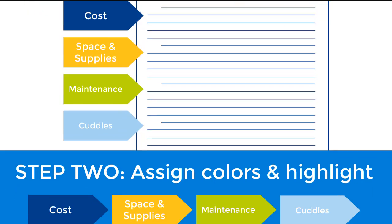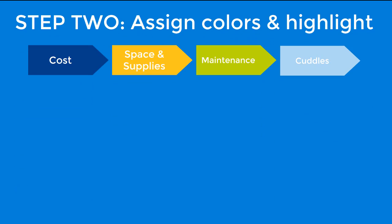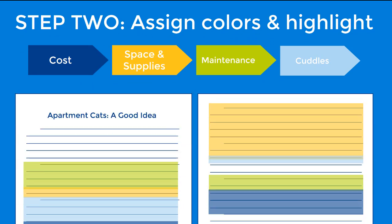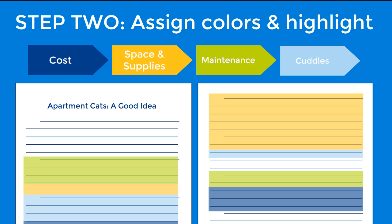Looking at your list of themes, give each theme a color. Have each group member choose a theme, go through your project, and highlight when they find that theme.